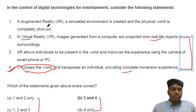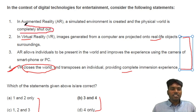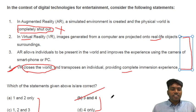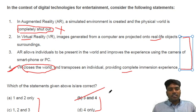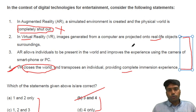Now we apply the etymology tick term: what does virtual mean? It means not in the real world. So the word 'virtual' goes much more with statement four, which says it closes the world. Now read statements one and three. Statement one says in augmented reality a simulated environment is created and the physical world is completely shut down — but statement three says augmented reality allows individuals to be present in the world. If one is correct, the other has to be wrong. So the answer is statements three and four. Even if this kind of question comes, don't panic — focus on these tick terms, take it slowly and you will be able to solve it.